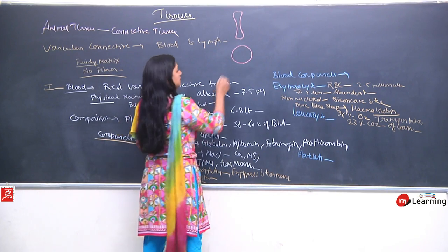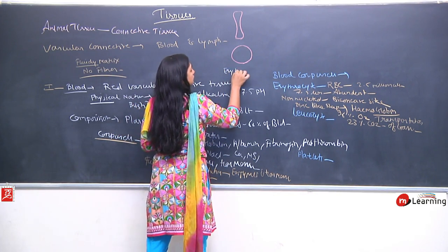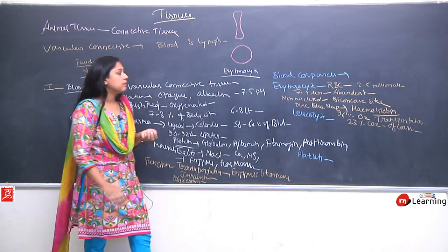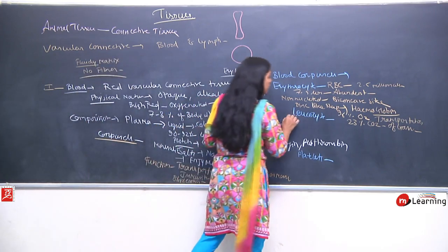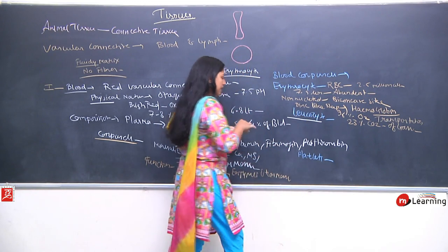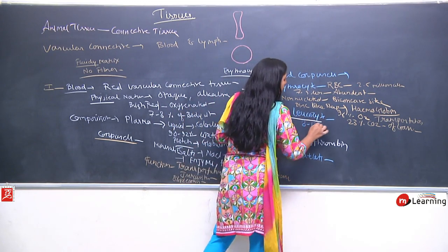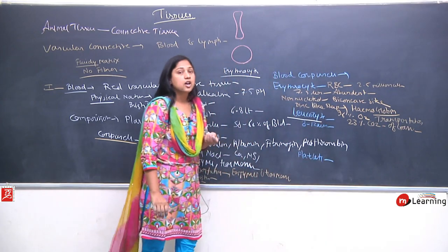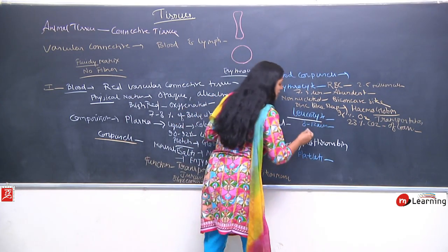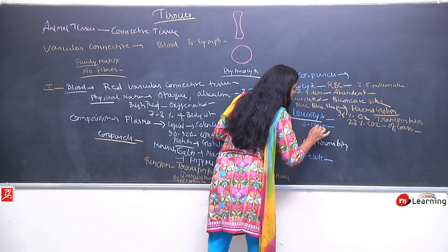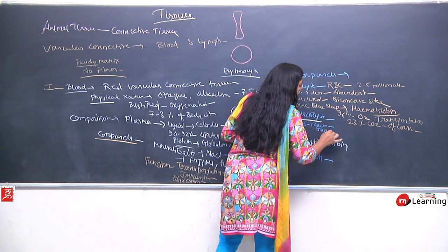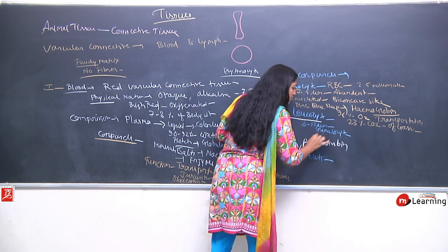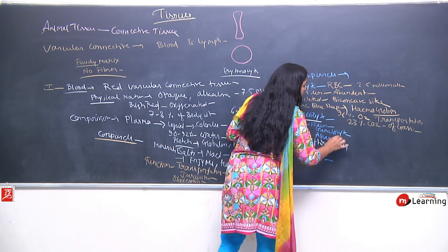These are erythrocytes — the most abundant blood cells, around 2.5 million cells. After erythrocytes comes leukocytes, which are 8 to 12 micrometers in size. They are of two types: granulocytes (which have granules in their cytoplasm) and agranulocytes (which have no granules in their cytoplasm).